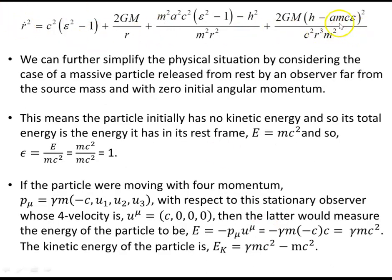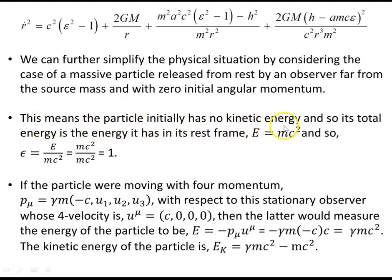r dot squared is expressed in terms of epsilon and h. We can further simplify by considering a massive particle released from rest by an observer far from the source mass, with zero initial angular momentum. Setting h = 0 and epsilon = 1 — since the particle initially has no kinetic energy and its total energy equals its rest energy E = mc², giving epsilon = mc²/mc² = 1.